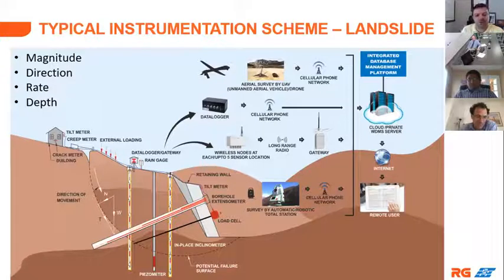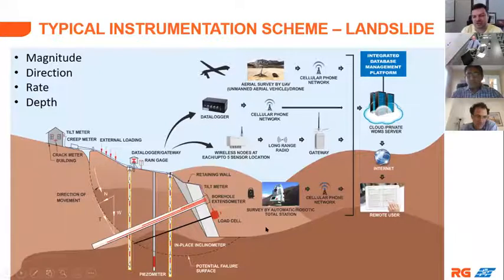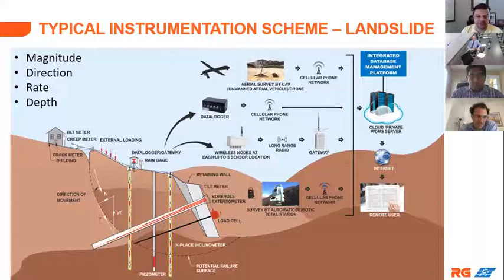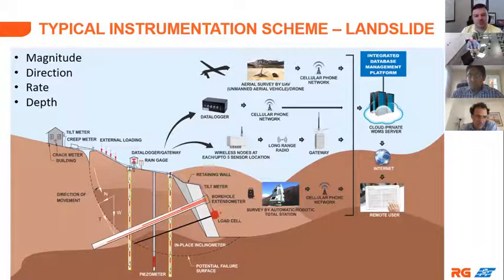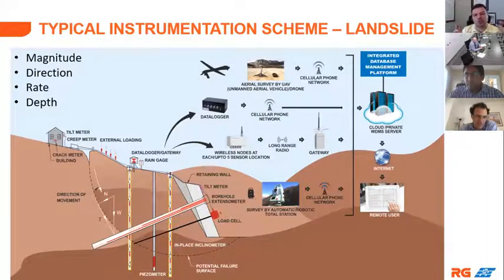Other devices include load cells — used when we try to put anchors to hold the landslides — as well as an instrument called an extensometer, which in multiple directions can help you understand the deformation along the axis of the instrument at various anchor points placed in the strata. One of the useful tools being implemented over the last 10 years is the total station. Even though it is a surveying tool, we've converted it into a robotic device that collects automatic deformation data using optical prisms, giving a high-resolution deformation profile of the surface.